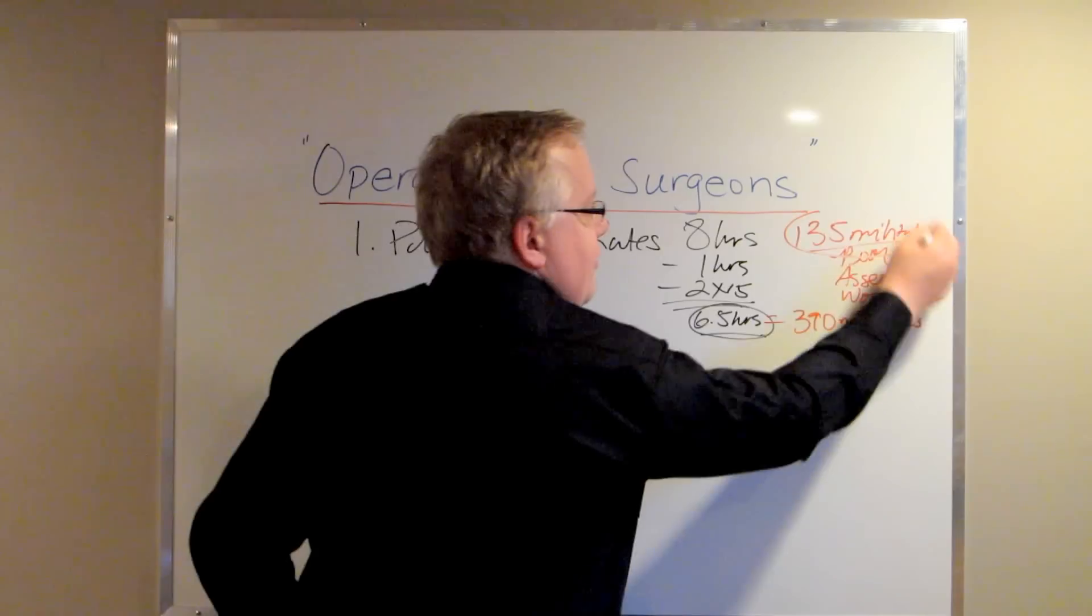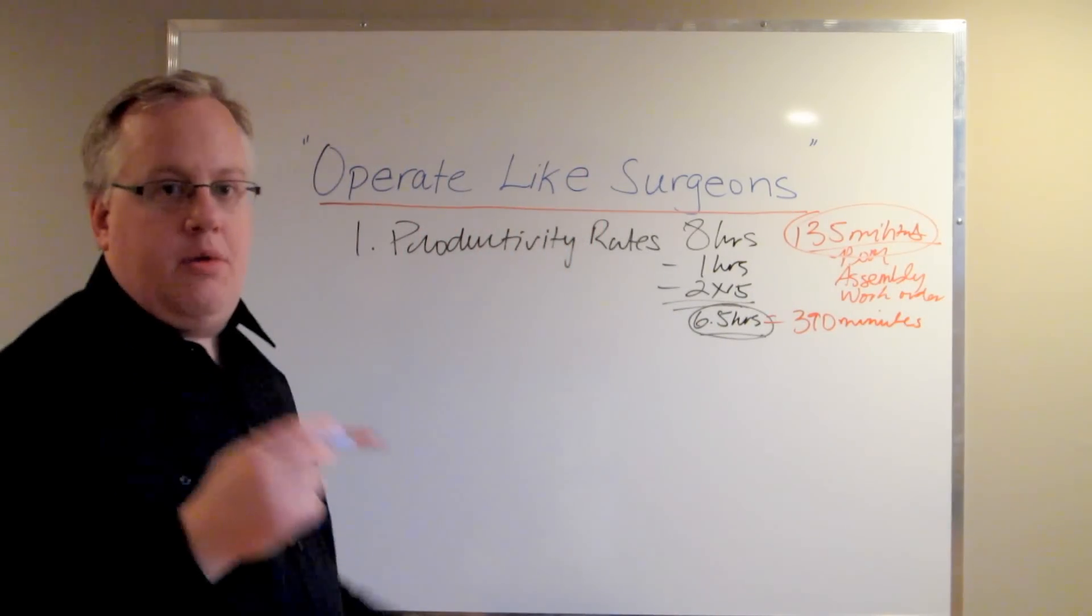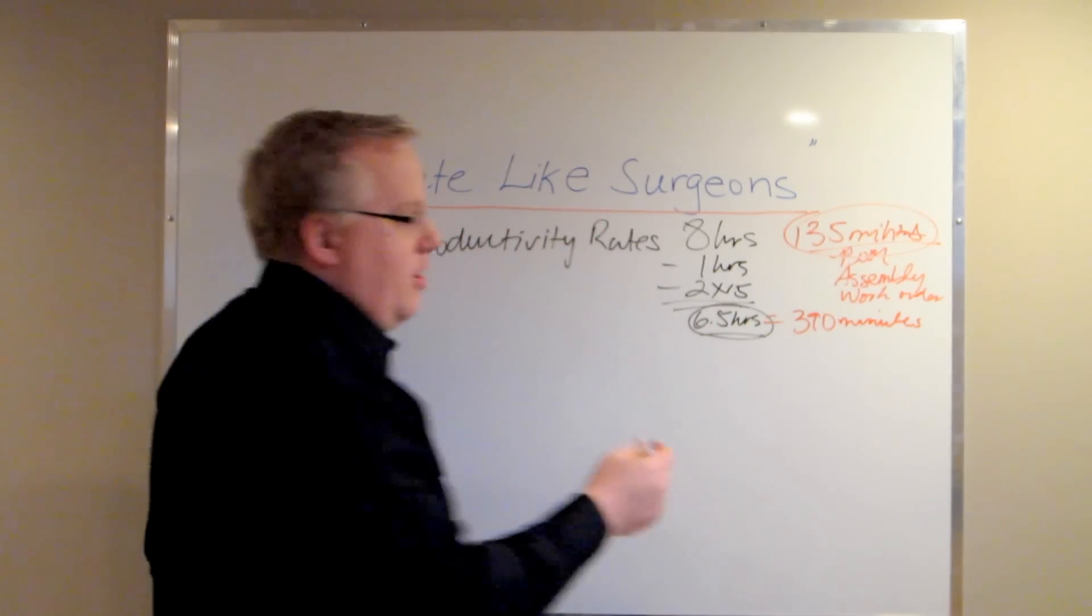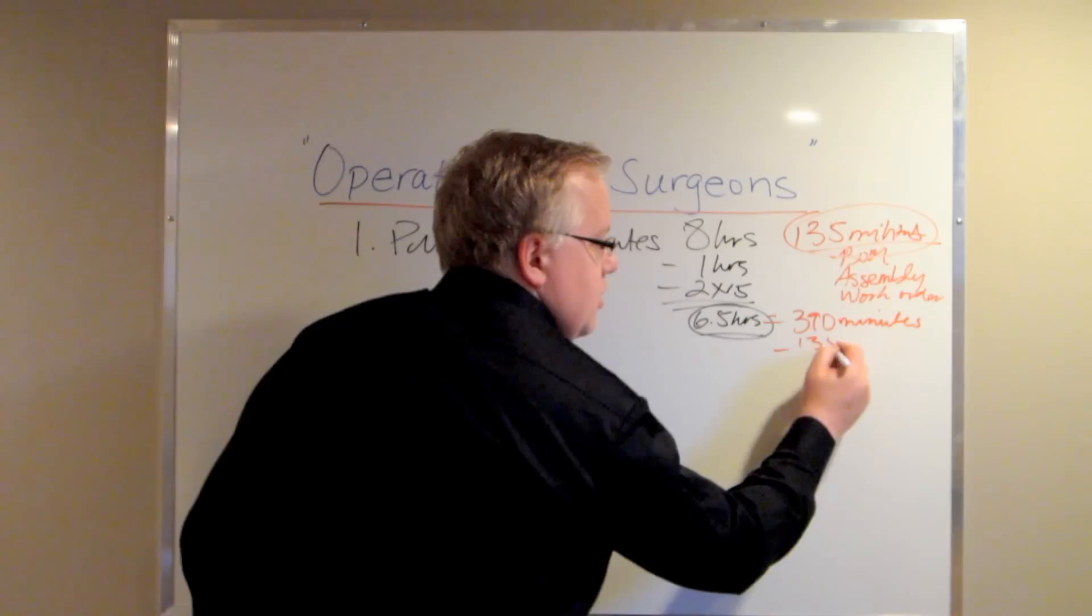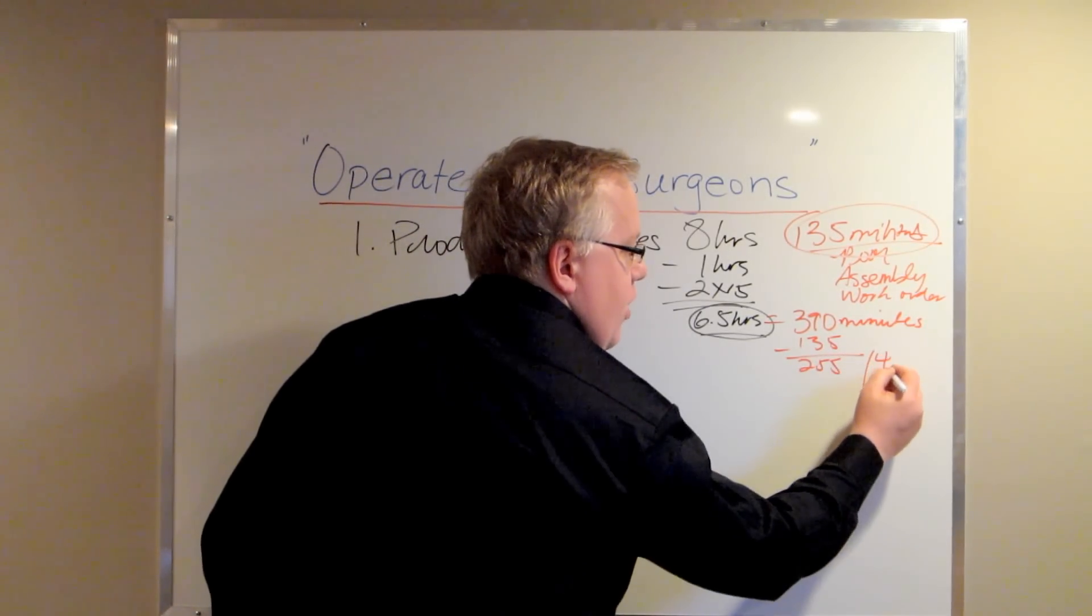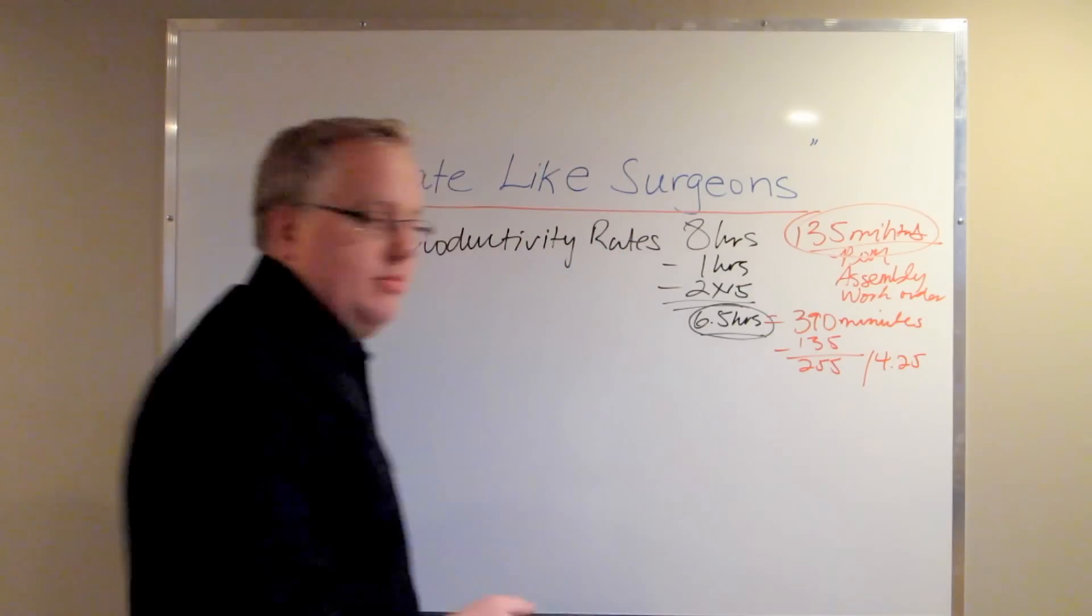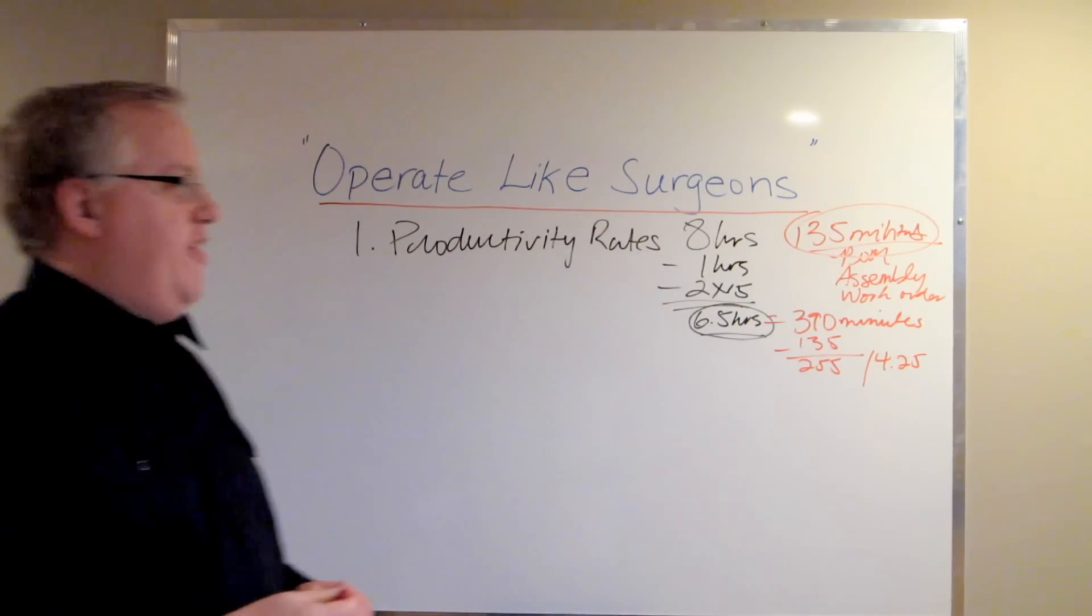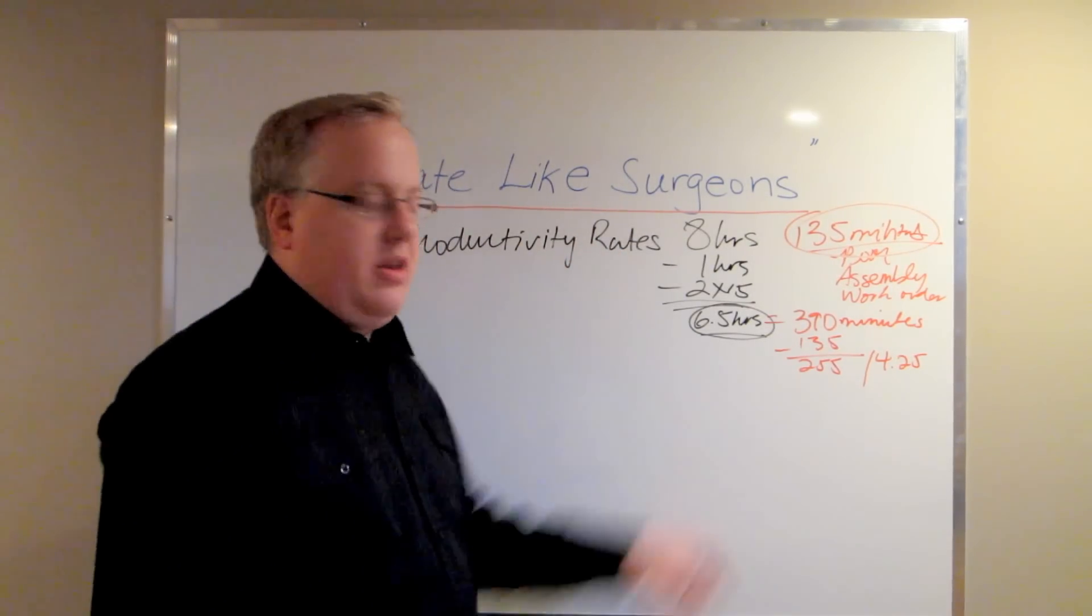We encountered an average of 135 minutes per work shift of downtime. You take that off, you're left with 255 minutes, or 4 hours and 25 minutes of actual work time. So you got 255 minutes where work was actually being done.